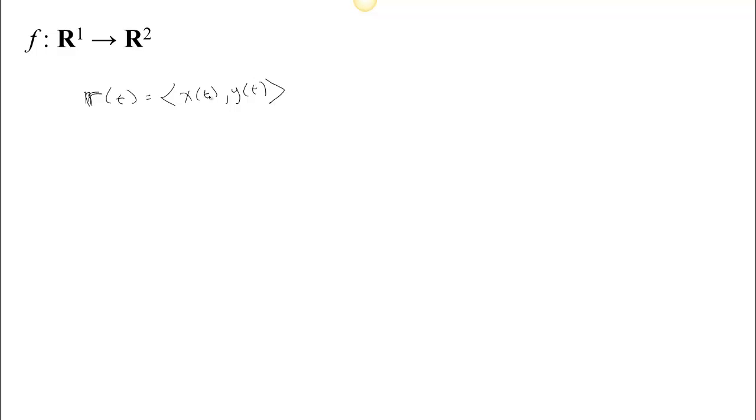Let's go up a level and talk about functions with one input and two outputs. We've already seen some examples of these. Since there are two outputs, this function is vector-valued — the output is a vector. We could think about those two outputs as a location in the plane, calling them x of t and y of t. A specific example would be x of t equals cosine t and y of t equals sine t.